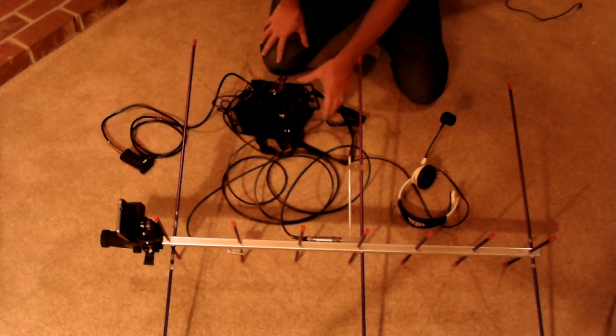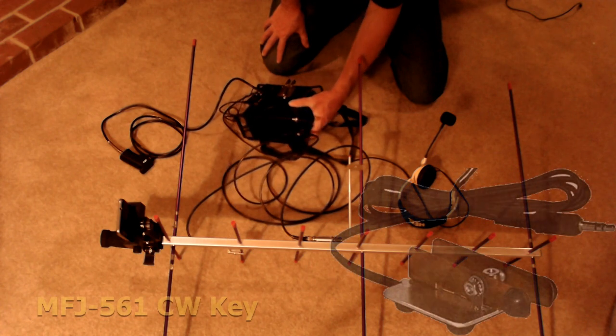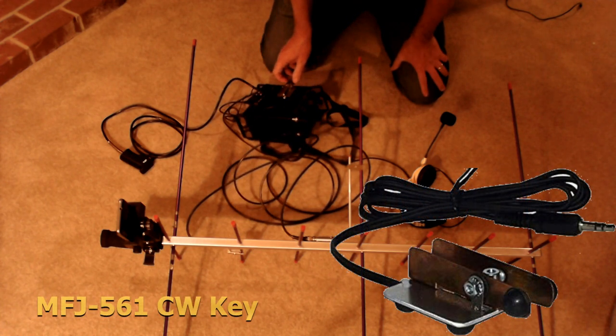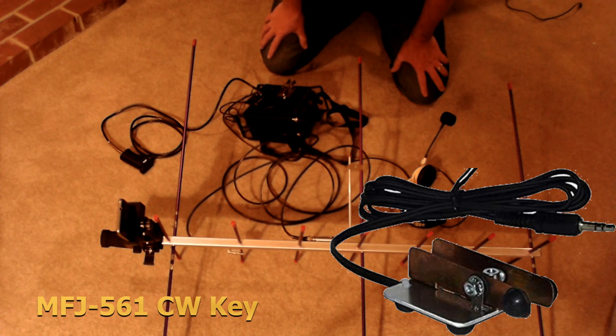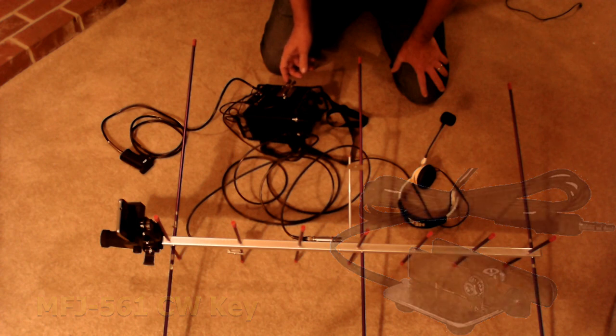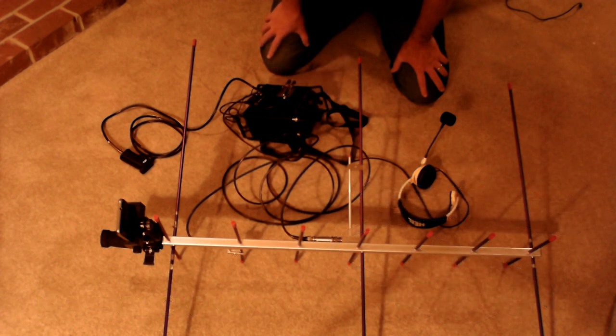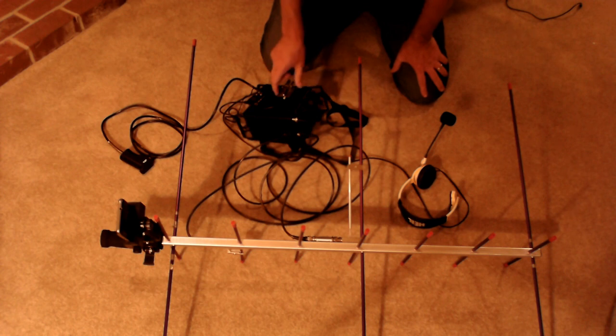The next component that's very important for linear operation is a Morse code key. You can actually do Morse code on the satellites, but a lot of people use a Morse code key to find themselves on the passband. When you transmit, you'll hear yourself on the downlink passband. You just send a little tone and you can find yourself. I have that Velcroed on because this whole setup is portable and I can walk around while I operate.